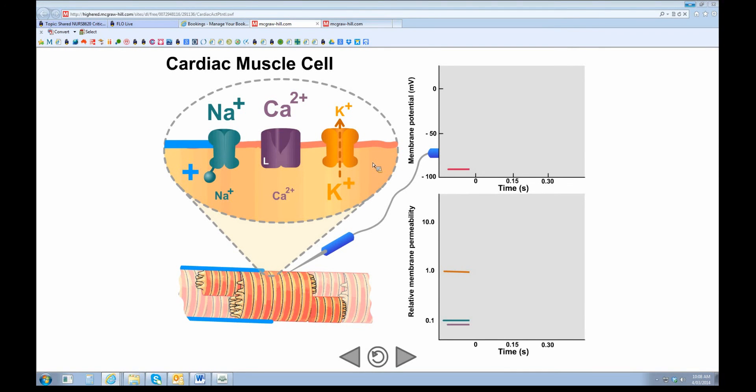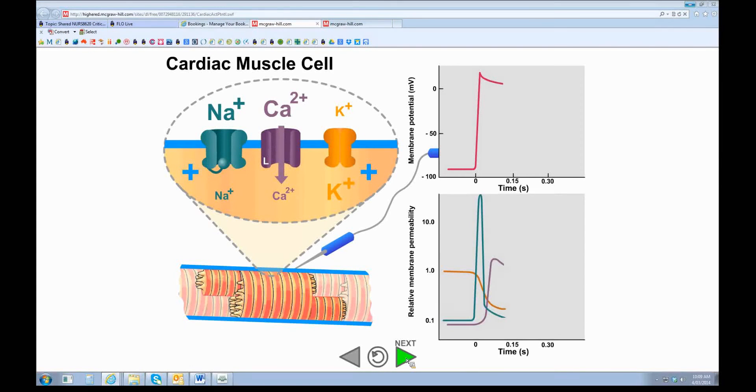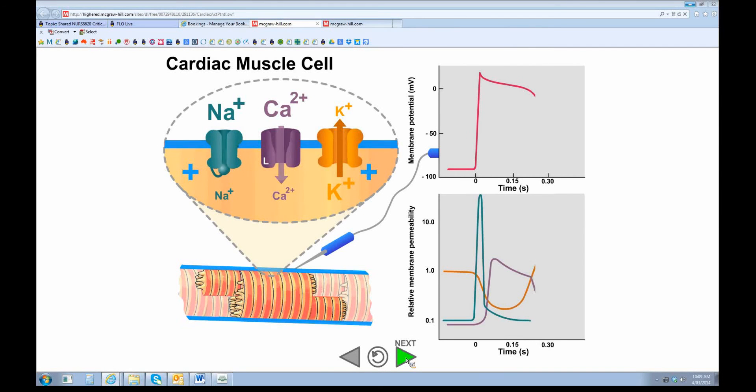For resting membrane potential, this red-orange line is the membrane. You've got the three cations: potassium, sodium, and calcium. These have gated channels or little gates which allow the ions to move across. You can see that they move back and forth over time.